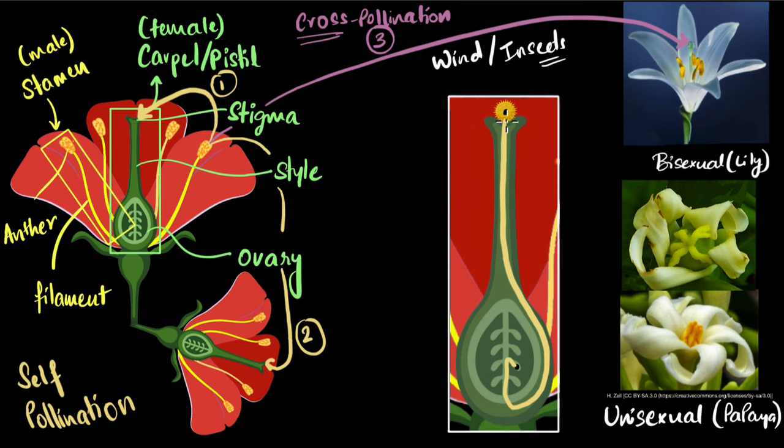And then inside the tube, the sperm cells travel all the way, and then finally reach and meet the egg cells. And when that happens, we say fertilization has happened.